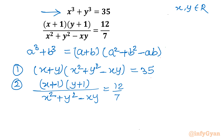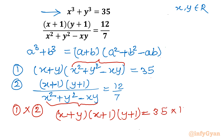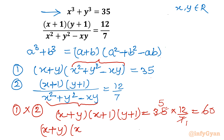Now let us multiply both equations. The term (x² + y² - xy) cancels from numerator and denominator, leaving us with (x+y)(x+1)(y+1) = 35 × 12/7 = 60.